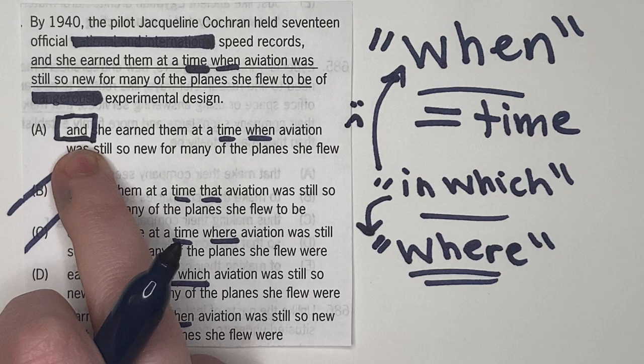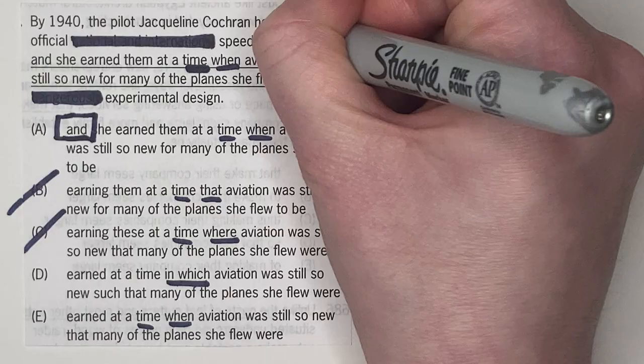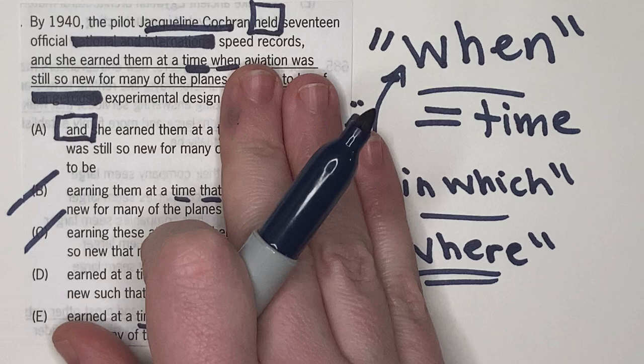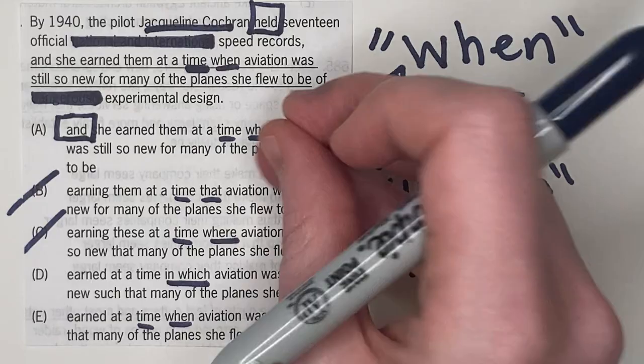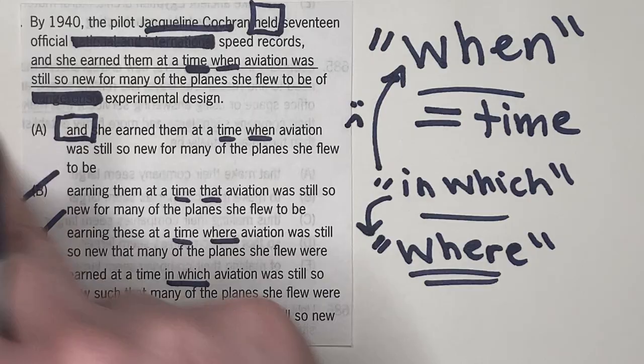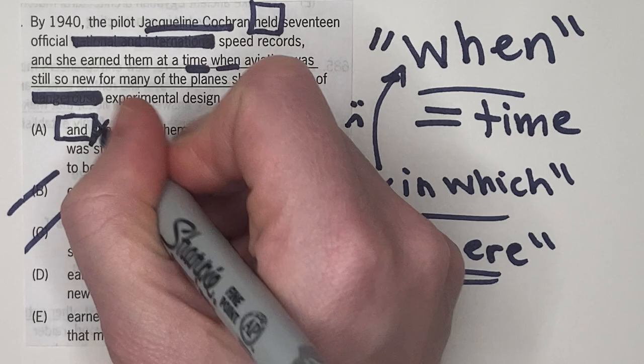So the pilot Jacqueline Cochran held 17 official speed records. So we have this verb held. Jacqueline Cochran is our subject. She's doing this action of holding and she earned them. So on the GMAT, if you're going to go the subject, then a verb, and then another verb that this subject did,